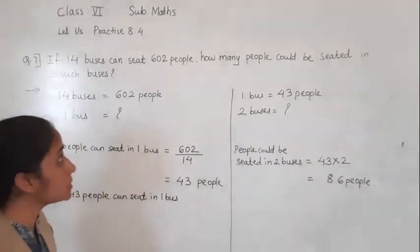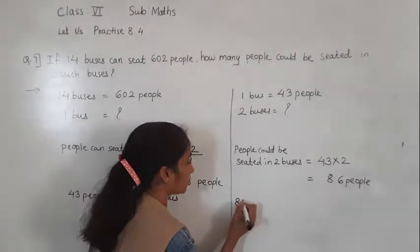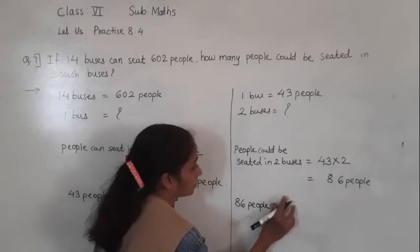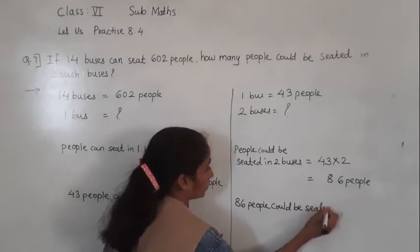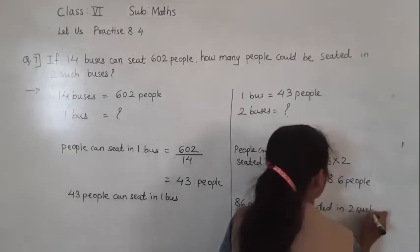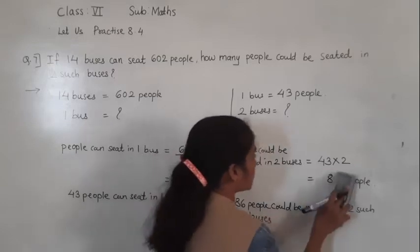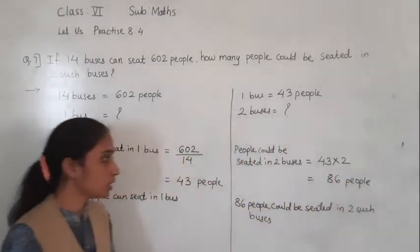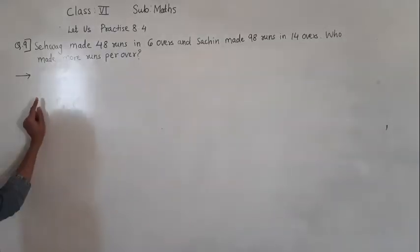So 86 people could be seated in 2 such buses. That is our answer: 86 people could be seated in 2 such buses. Now let's solve question number 9.